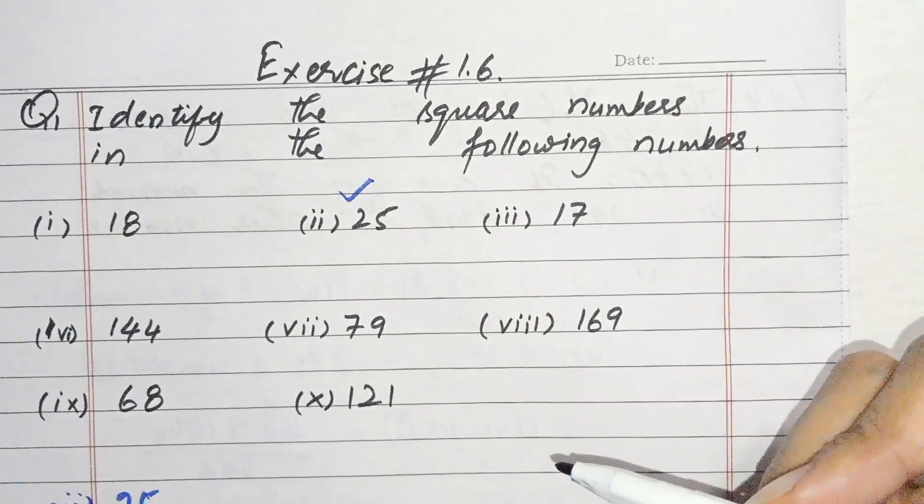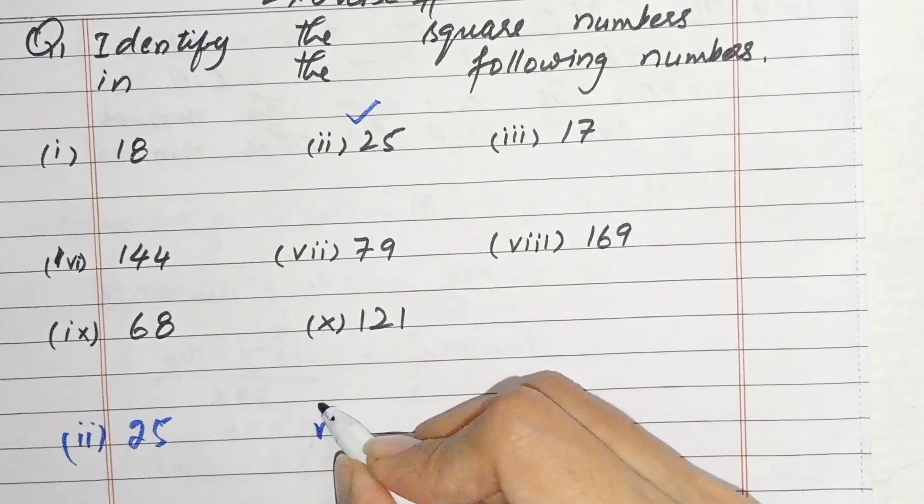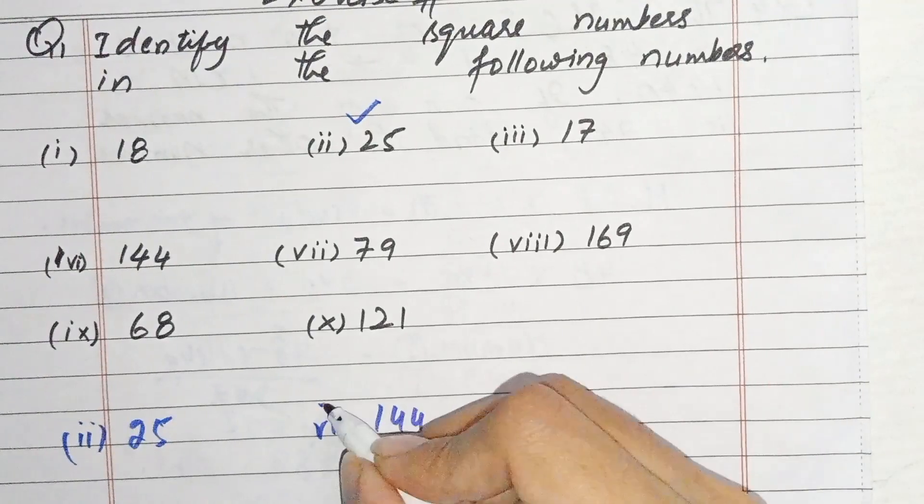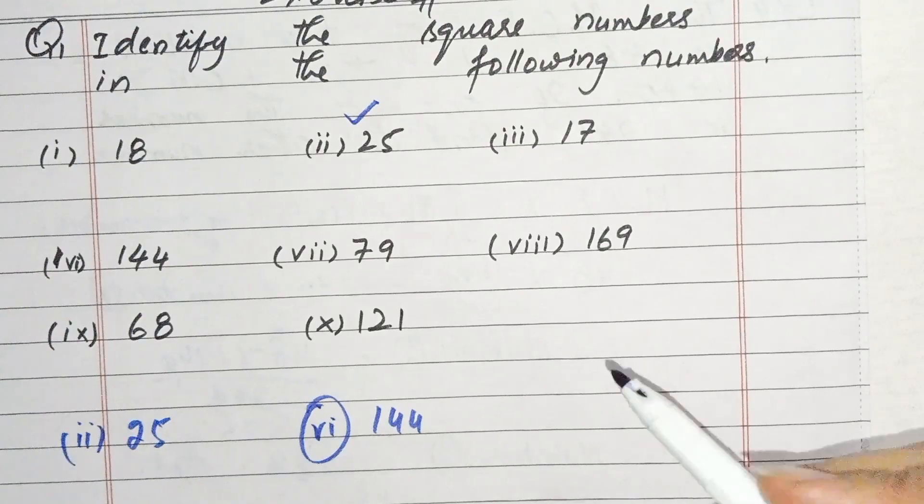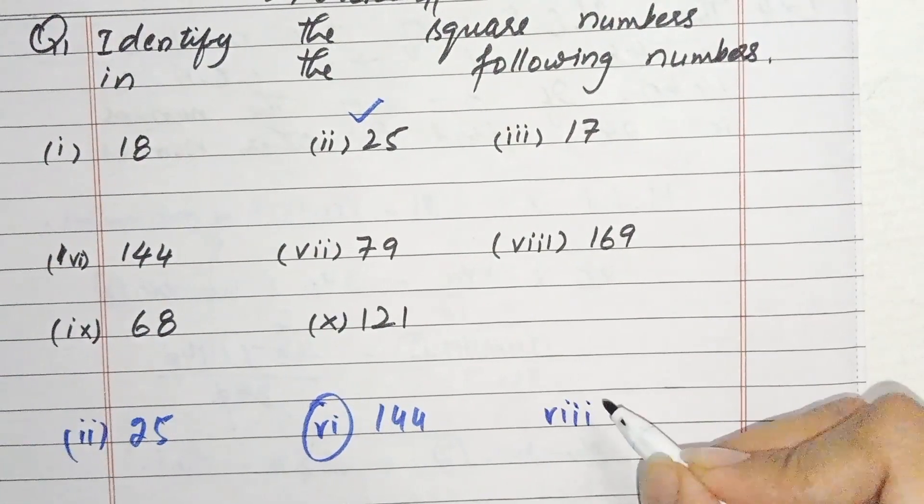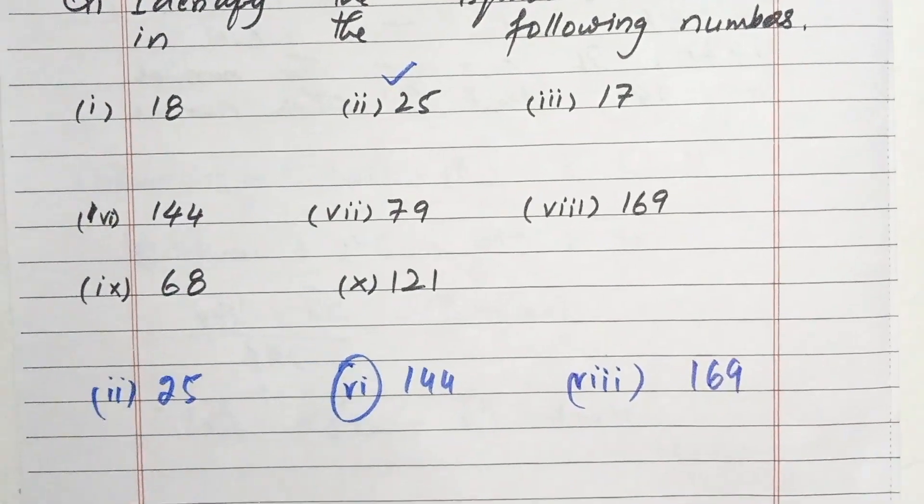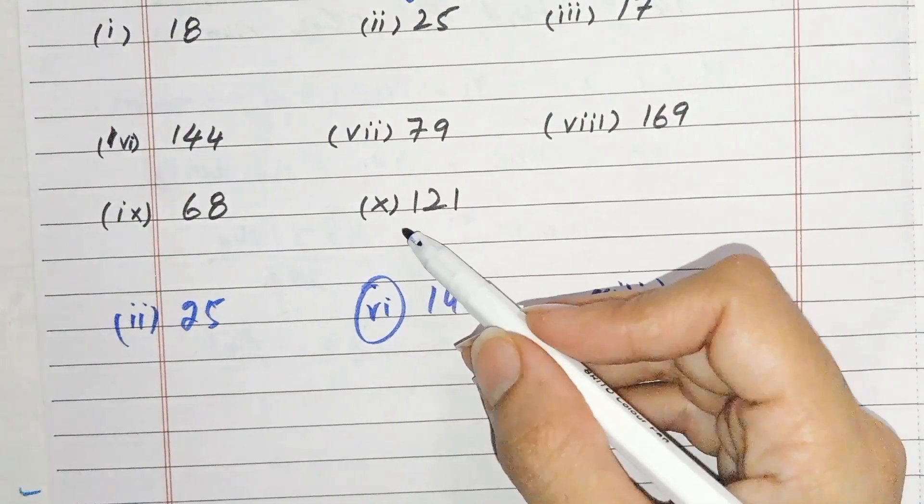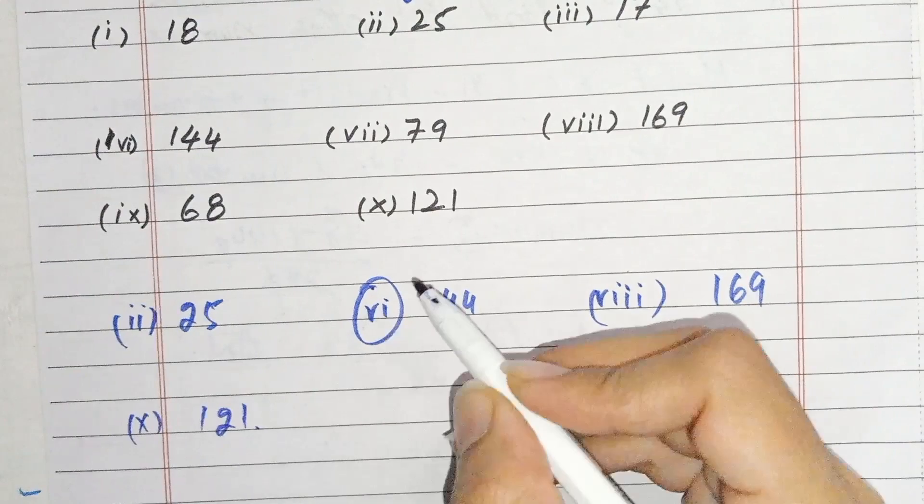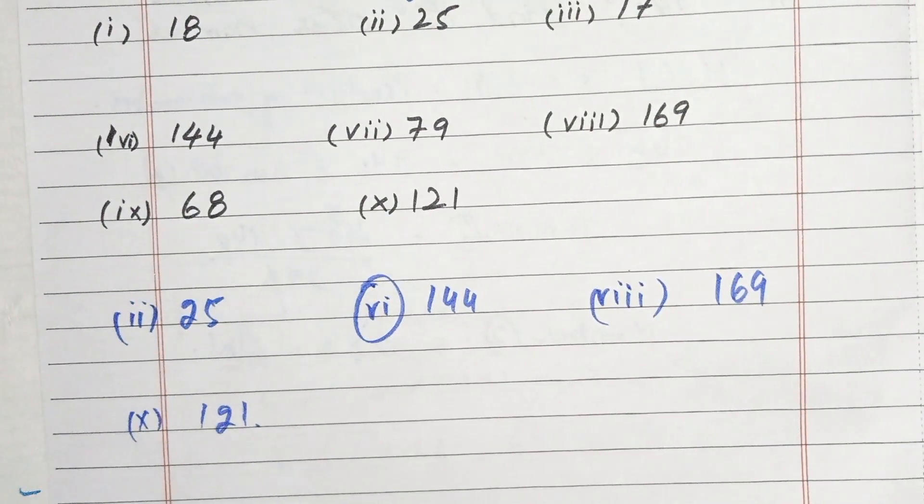17 so this is why I have to write it to get 144, that's 12 times, 12 times 12 equals 144. This is the square number 8 times 8 equals 64, and then it is the square number. And then it is the 10th part, this is the square number 11 times 11 equals 121.